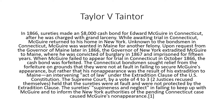When McGuire failed to appear for trial in Connecticut in October 1866, the cash bond was forfeited. The Connecticut bondsman sought relief from the forfeiture on the grounds that they were not at fault in failing to secure McGuire's appearance, but rather that his non-appearance was the result of his extradition to Maine — an intervening act of law under the extradition clause of the U.S. Constitution.